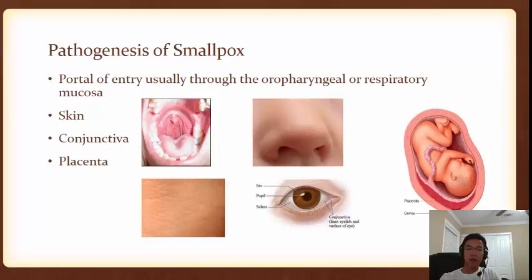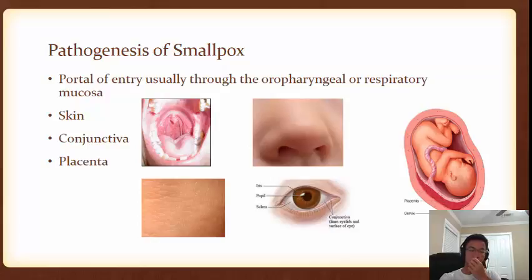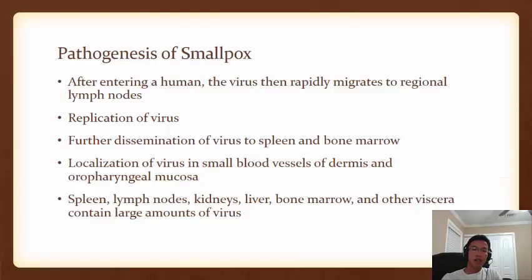The pathogenesis of smallpox begins with its portal of entry, which is usually through the oropharyngeal or respiratory mucosa — more commonly through the mouth or nose. Less common portals of entry include the skin, such as through a cut with infected material, the conjunctiva, or the placenta from mother to child. After the virus enters a human, it rapidly migrates toward the regional lymph nodes, where replication really takes off.